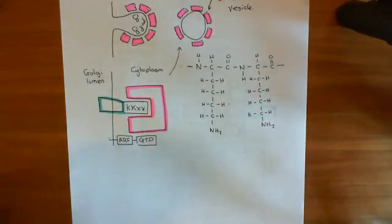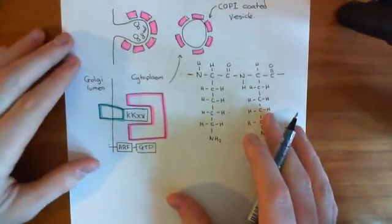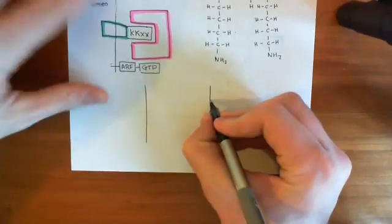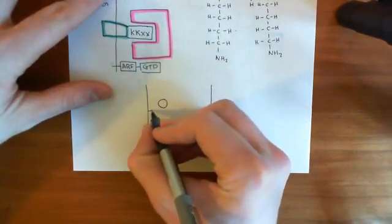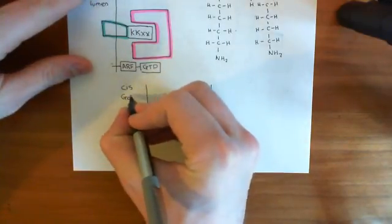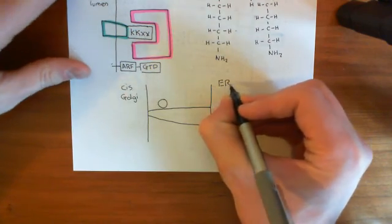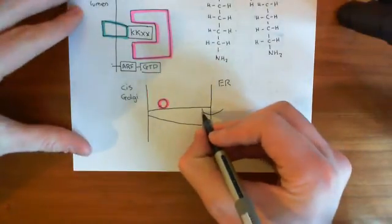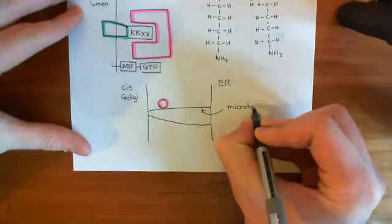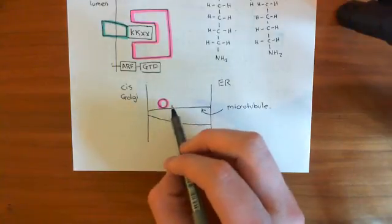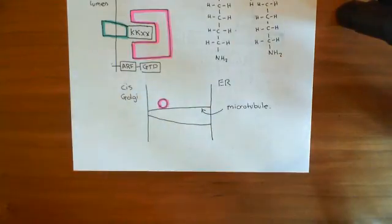Now let's look at the transportation process of these COP1-coated vesicles to the ER membrane. The way it's going to work is they're going to be transported along microtubules. We have the Golgi membrane here and the ER membrane over there. These COP1-coated vesicles are going to migrate along microtubules that span the distance between the cis-Golgi membrane and the ER membrane, and they're going to fuse with the ER membrane. Before they can begin the fusion process, what's going to have to happen is you're going to have to uncoat them — take off all of the COP1 proteins, or at least partially uncoat the vesicle.